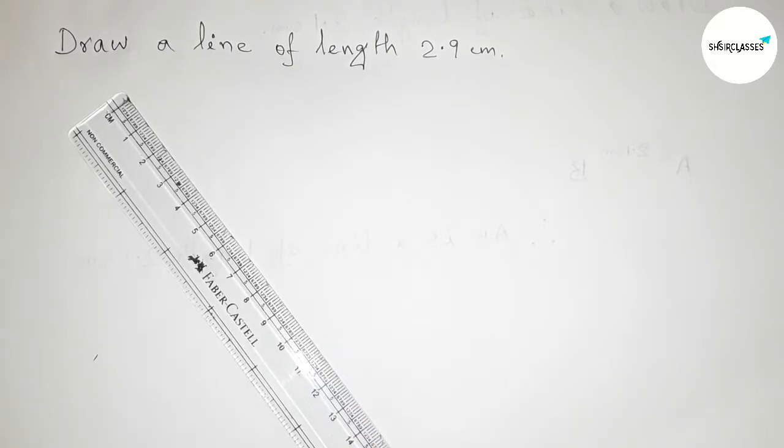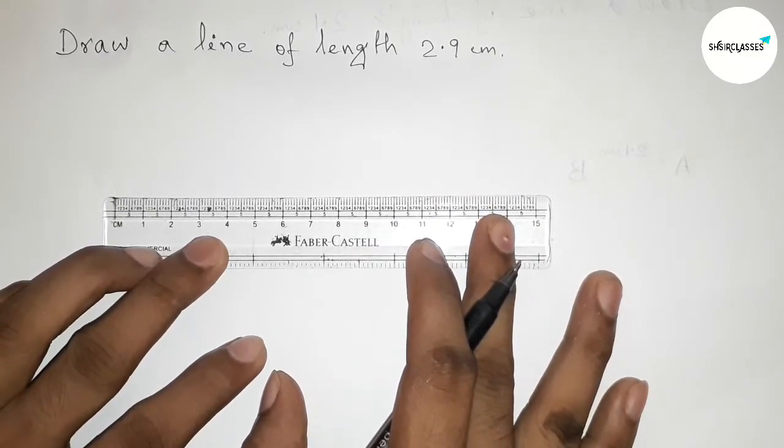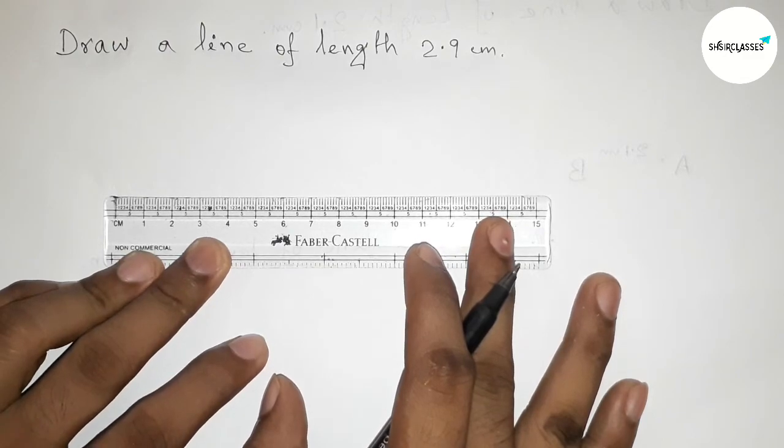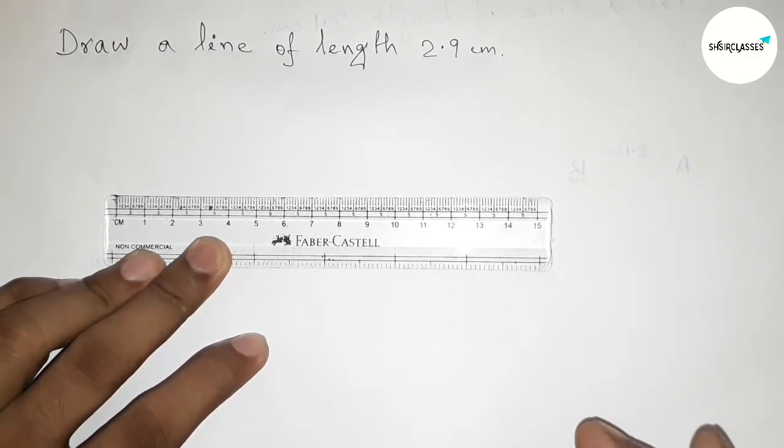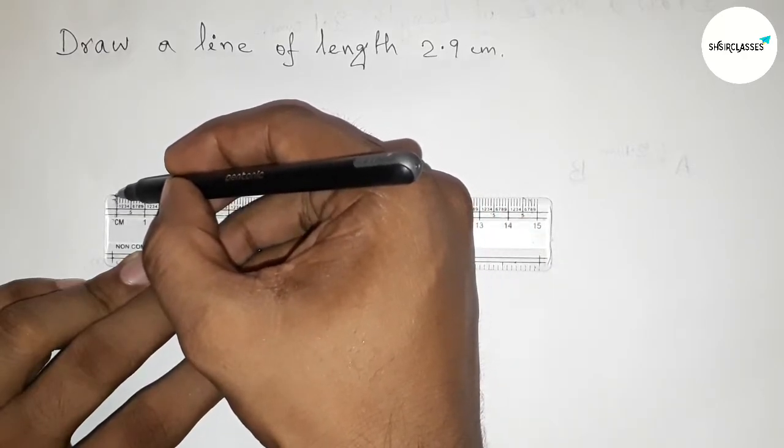First of all, I'm going to use a scale and a pen, but you should use a pencil at home. Okay, so first put the scale this way and count the length 2.9 centimeter. This is the starting point.